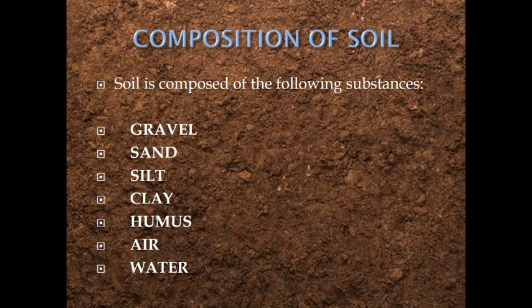Composition of soil. Children, what do you mean by composition? It means the substances which are present in soil. The substances present in soil include gravel, sand, silt, clay, humus, air, and water.